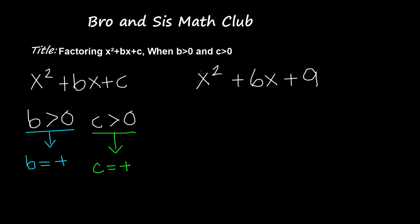So to factor this, first we're going to go ahead and put two parentheses, because we know that to factor this trinomial we're going to have two binomials that when multiplied together give us this trinomial. And we know that x times x gives us x squared.